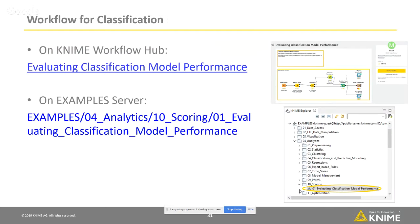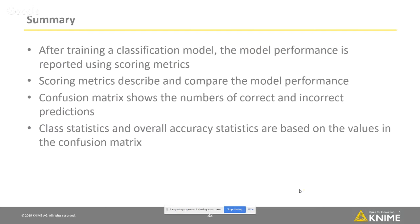This workflow for classification is also available for you to download on our Workflow Hub page and also in the KNIME examples. As a summary of this webinar, I introduced you to several scoring metrics — the class statistics and overall accuracy statistics — and they are all based on the confusion matrix.